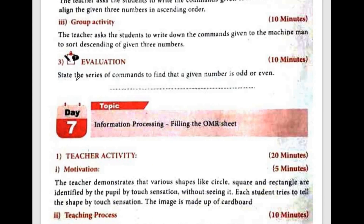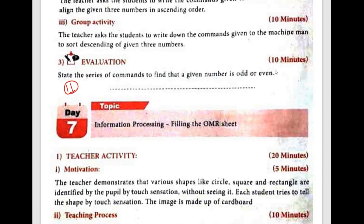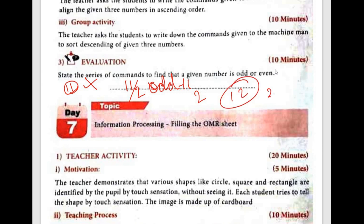Day 6: State the series of commands to find whether a given number is odd or even. If you have a number like 11, divide it by 2. If it is in the 2 times table, it is even. If not, it is odd. So 11 is not in the 2 times table, making it an odd number. 12 is in the 2 times table — 2 into 6 — so 12 is an even number.